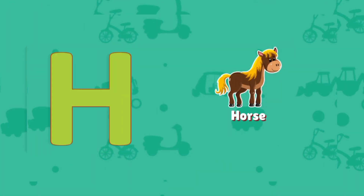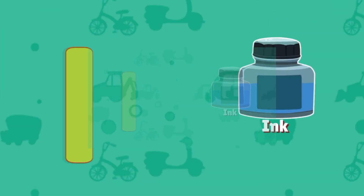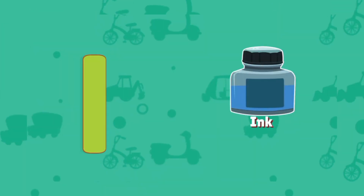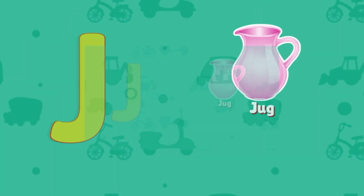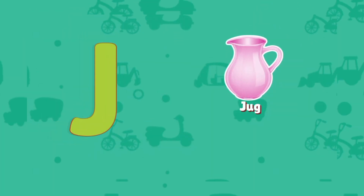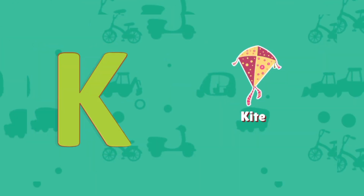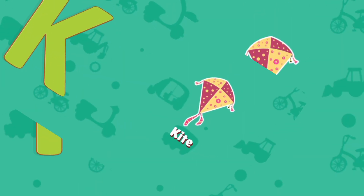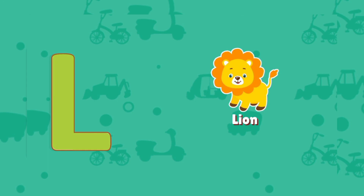H. H for horse. I. I for ink. J. J for jug. K. K for kite.